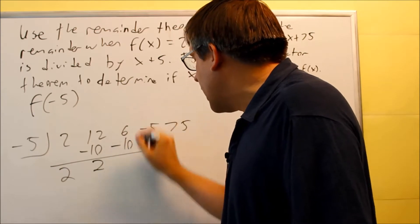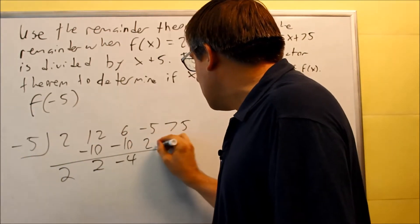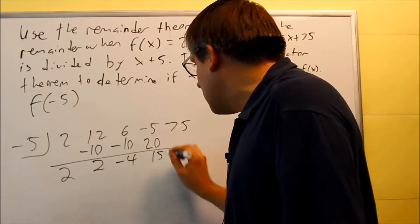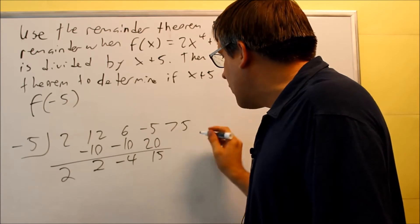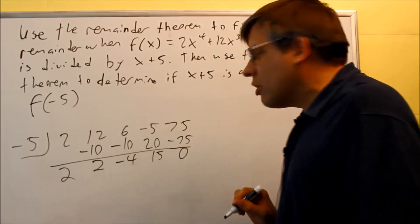Multiply negative 10. We add that together. Negative 4. Multiply that. We get positive 20. Add that together. We get 15. 15 times negative 5 is negative 75. And then we add that together and we get a 0.